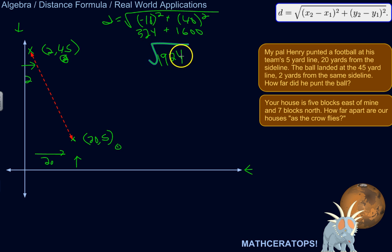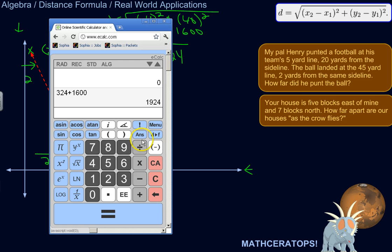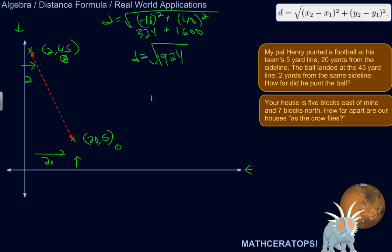So all this becomes 1924 and we need to take the square root of that. I actually need the calculator for that. Square root. So about 43.8. Let's call it 43.9. Let's round it 43.9 yards.